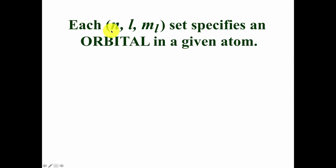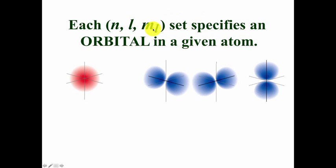Now each grouping of the first three quantum numbers, N, L, and M sub L, specifies an orbital in a given atom. And orbitals are regions in space where electrons can live. And so this would be an S orbital, a spherical location or region in space. These are the three different P orbitals, which look kind of like dumbbells and they have orientations in the X direction, Y direction, and Z direction perpendicular to each other.